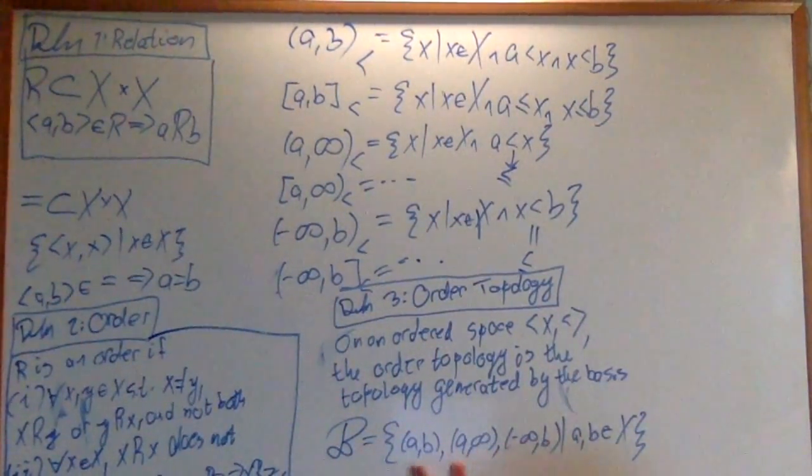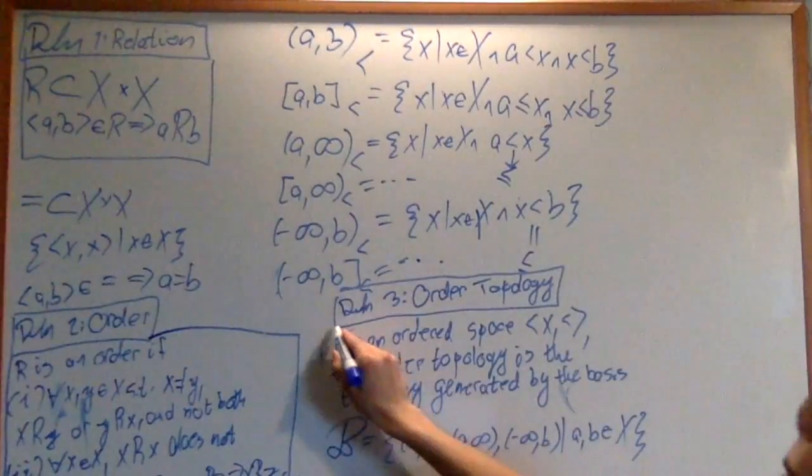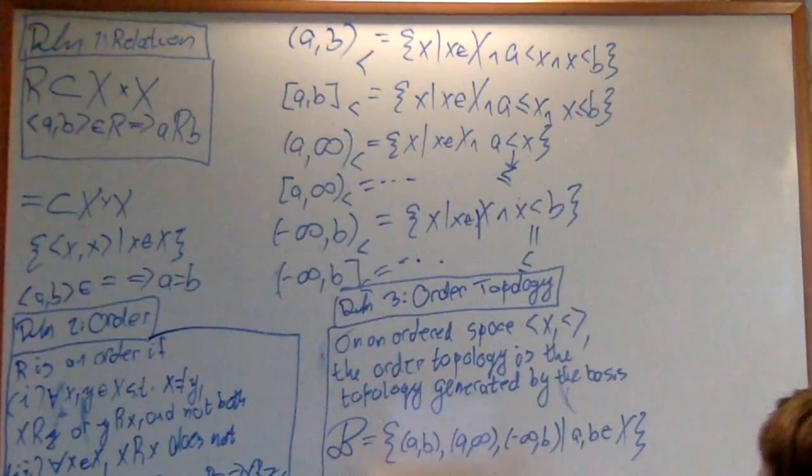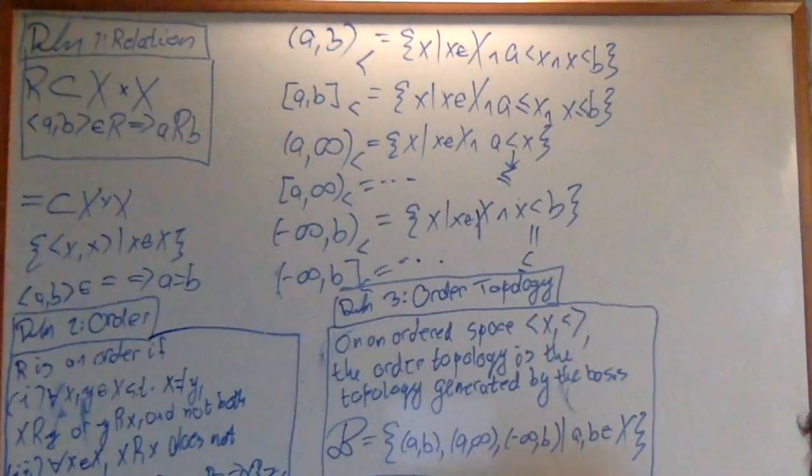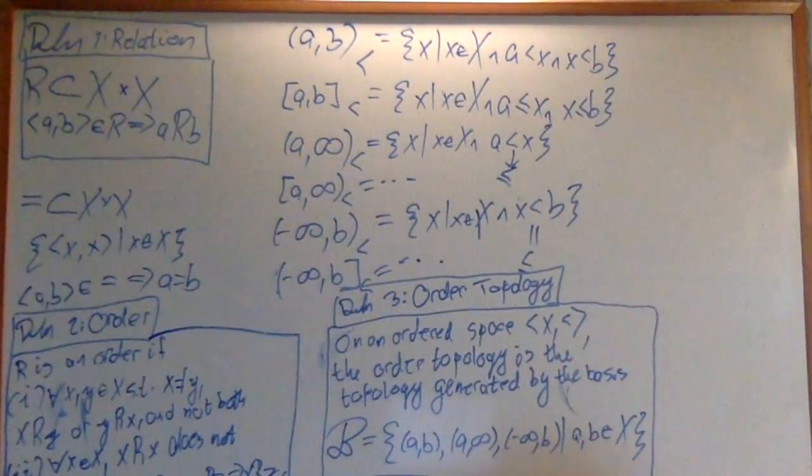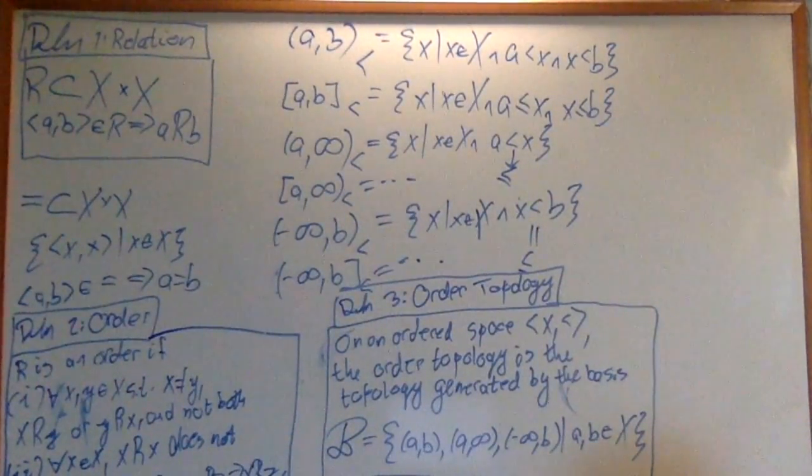So basically meaning, we take all of these open intervals, and we also take all of these infinite intervals, and we make that a basis, and then we generate the topology with this, which is also what we did with the real numbers. Remember, we said we take an open interval, and then we create this as a basis. That's what we proved. So we just do this exact same thing, except we do it more generally.